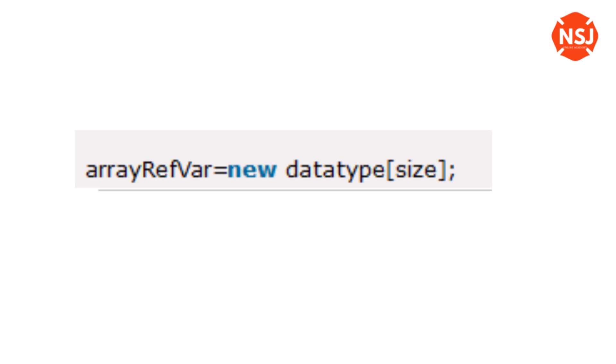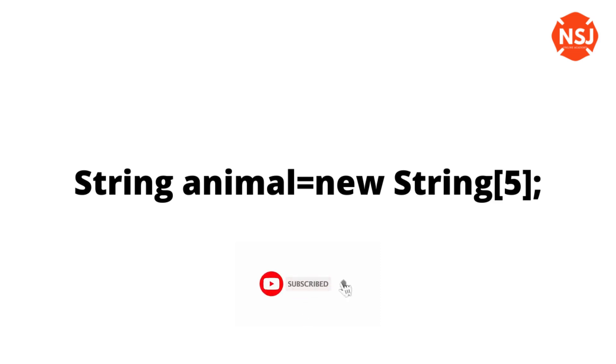In this syntax, the data type is followed by square brackets, and it is the array reference variable. If you want to use a new data type in this reference variable, you can use a new data type. You can also specify the array size. For example, if you want to use a string array called 'animal', you can define it with an array size.